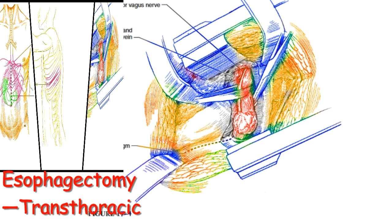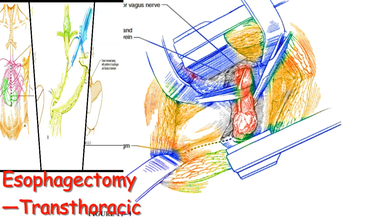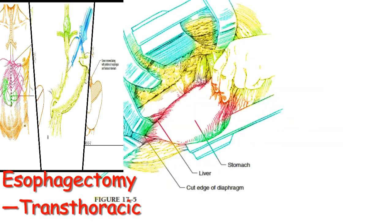The pleura overlying the esophagus is incised and the esophagus is dissected free from its bed. A Penrose drain is used to encircle the esophagus and provide retraction during the dissection. The surgeon should be able to include the lymph nodes surrounding the esophagus in the dissection. Care must be taken not to injure the posterior membranous trachea during mobilization. Once the esophagus is mobilized, it is transected at a point at least 4 cm proximal to the tumor.